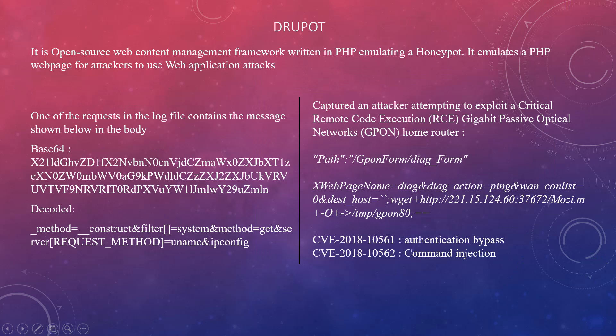Drewpot is a unique open-source web content management system written in PHP that emulates a honeypot, allowing attackers to launch web application attacks against it. One log file contains a message encoded in Base64. When decoded, it reveals the attacker used a GET request to identify what operating system the honeypot is running and its IP address.